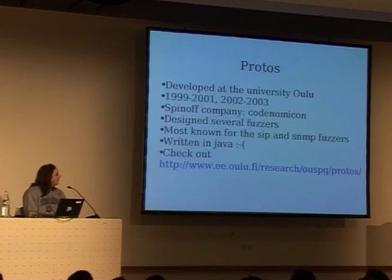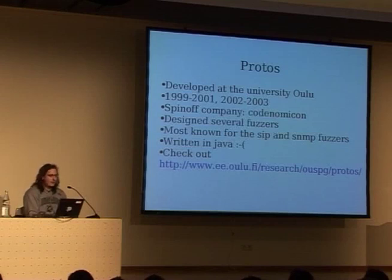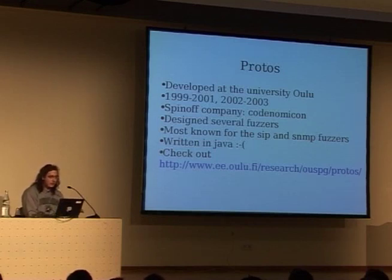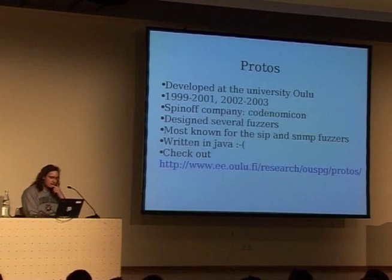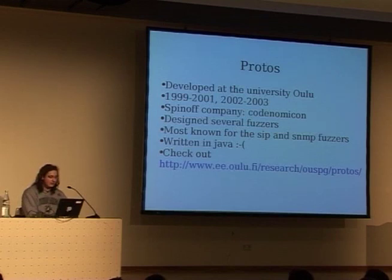The first tool is Protoss, developed at the University of Oulu. It was initially developed from 1999 to 2001, and then picked up again in 2002, 2003, and then again this year. They developed an IPsec fuzzer, and pretty much lots of people were vulnerable. They developed just one tool which will very precisely fuzz the protocol in great, very deep detail.